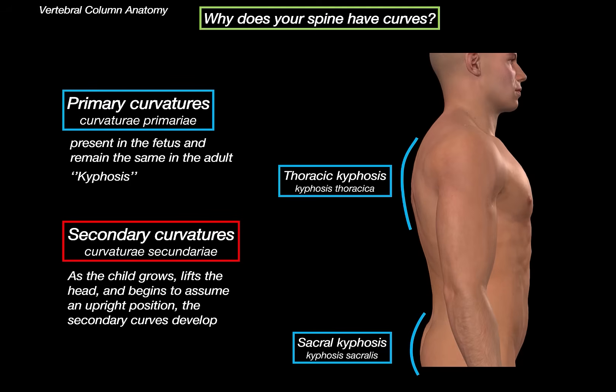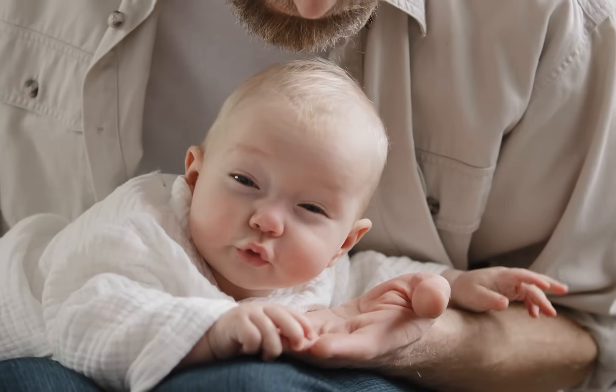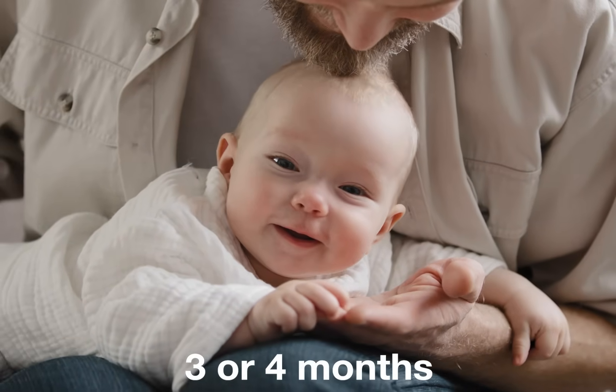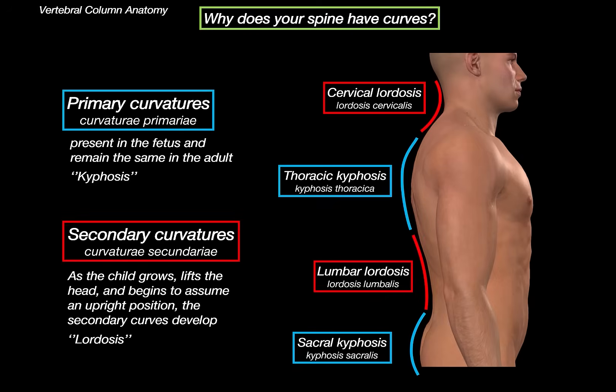As the child grows, lifts the head, and begins to assume an upright position, the secondary curvatures develop. These are known as lordosis. A normal lordosis is a gentle inward curve, and abnormal lordosis, also called hyperlordosis, is if the curve is too deep, causing lower back pain, muscle imbalances, postural issues, etc. The cervical curve forms when the infant is able to hold his or her head at 3 or 4 months, and sit upright at 9 months. The lumbar lordosis forms between 12 and 18 months when the child begins to walk. Any exaggeration of these natural curves causes problems, and is often due to postural problems, muscle atrophy, or weakening of bones.